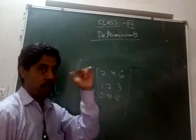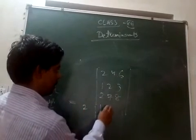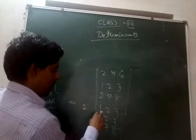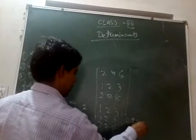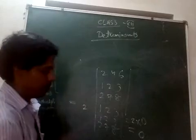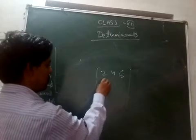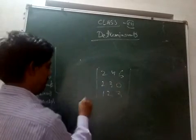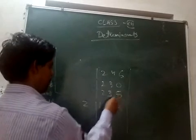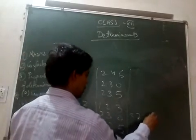Even if the rows are not the same after factoring, the value of the determinant is multiplied by that common factor. For example: 2 3 0 / 1 2 3 / 2 3 5. If you take 2 common from the first row, you get 2 times the determinant of 1 2 3 / 1 2 3 / 2 3 5. So you can take any number common from any one row or column in a determinant.